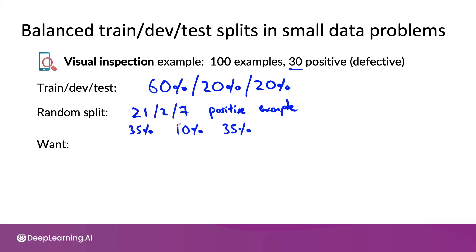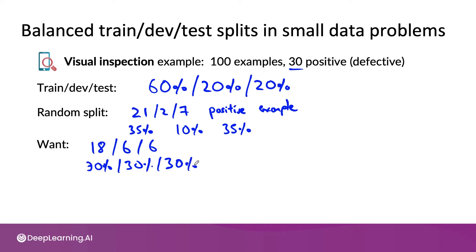So what we would really want is for the training set to have exactly 18 positive examples and the dev set to have exactly six positive examples — each being 30 percent positive. If you could get this type of split, it would be called a balanced split, where each of your train, dev, and test sets has exactly 30 percent positive examples.